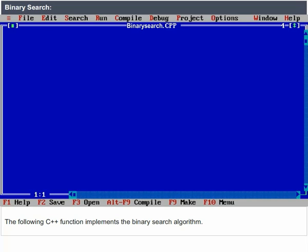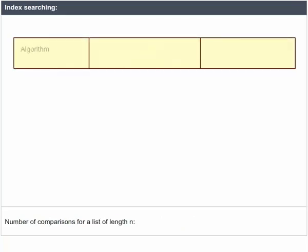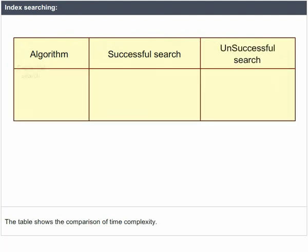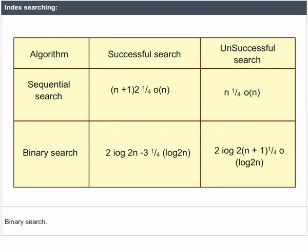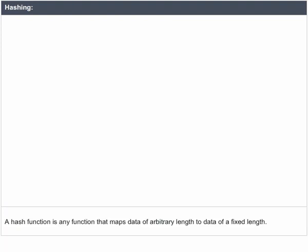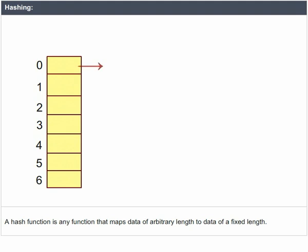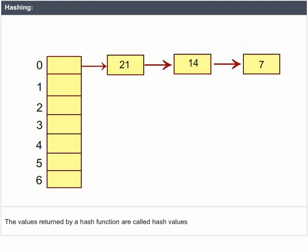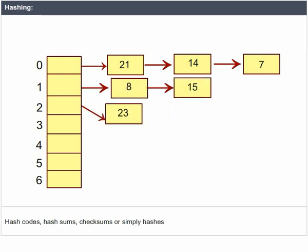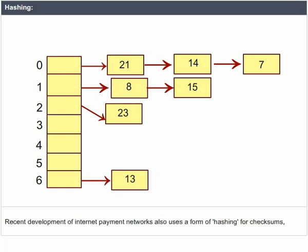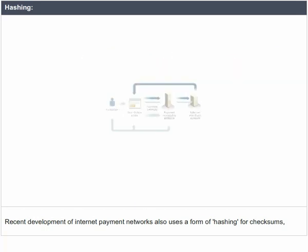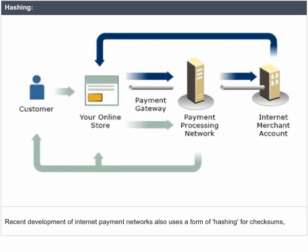A table shows the comparison of time complexity for sequential search versus binary search. Hashing: a hash function is any function that maps data of arbitrary length to data of a fixed length. The values returned by a hash function are called hash values, hash codes, hash sums, check sums, or simply hashes. Recent development of internet payment networks also uses a form of hashing for checksums.